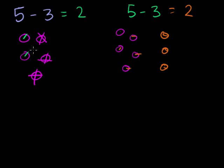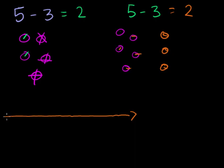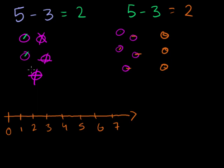Now we can also think of this from the number line point of view. Let me draw a number line. We can keep going forever, and actually we could go to the left of 0 into negative numbers, which we'll see in future videos. I'll start at 0: 0, 1, 2, 3, 4, 5, 6, 7. So if we do 5 minus 3 — start at 5. Since I'm subtracting 3, I decrease by 1, 2, 3, and I get to 2.